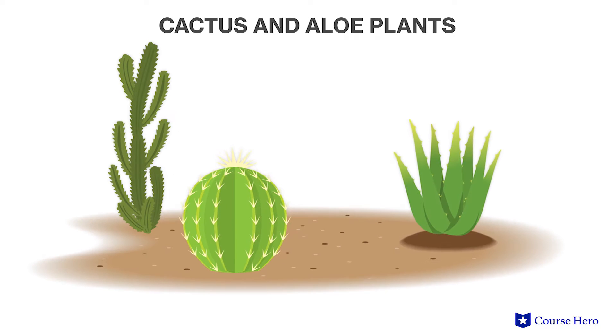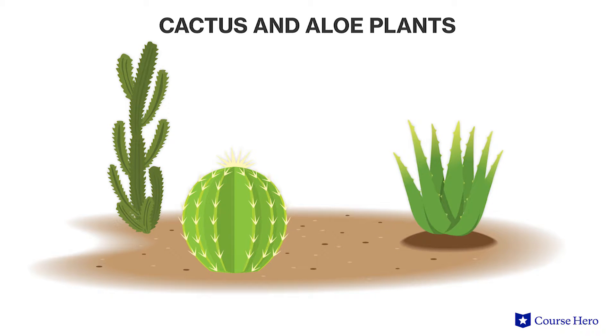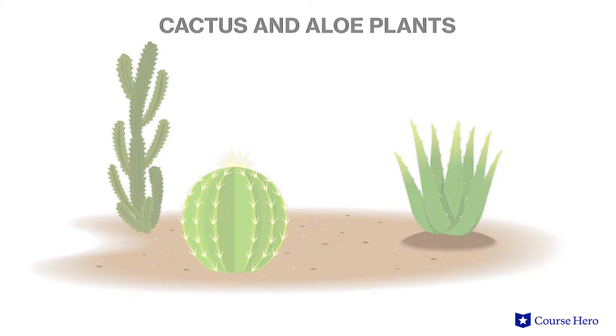Finally, waxes are found on the leaves of certain plants such as cactus and aloe plants, helping plants to conserve water.